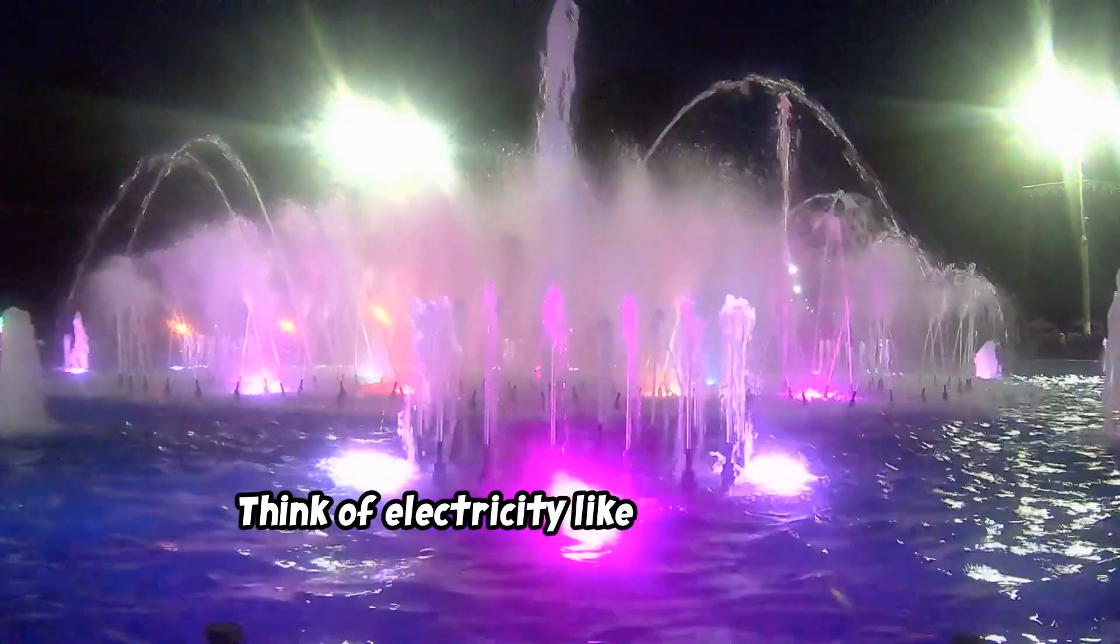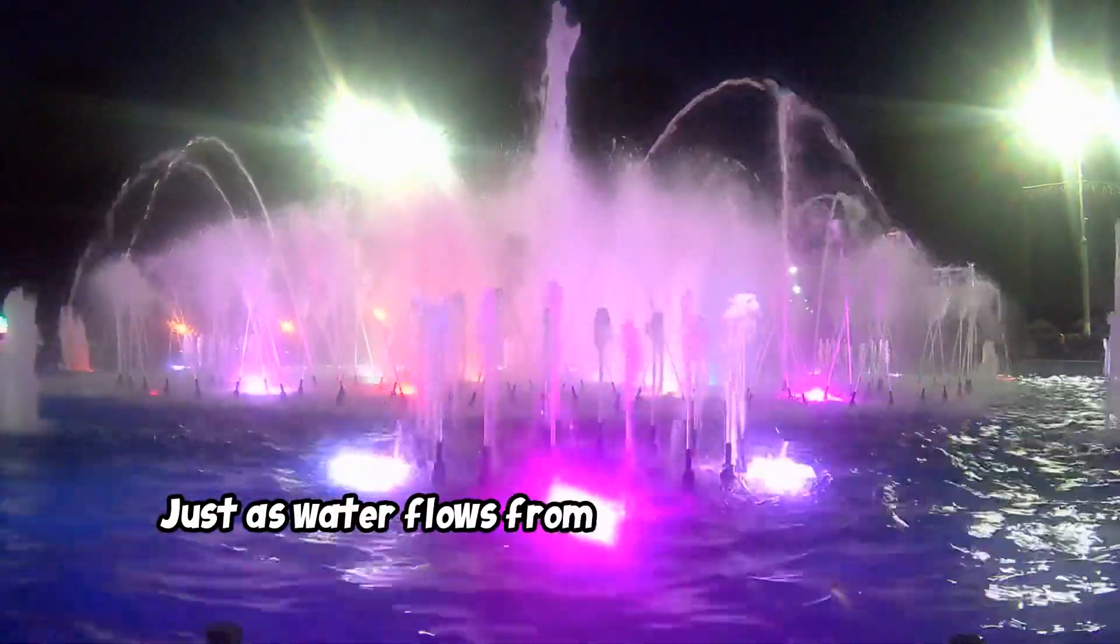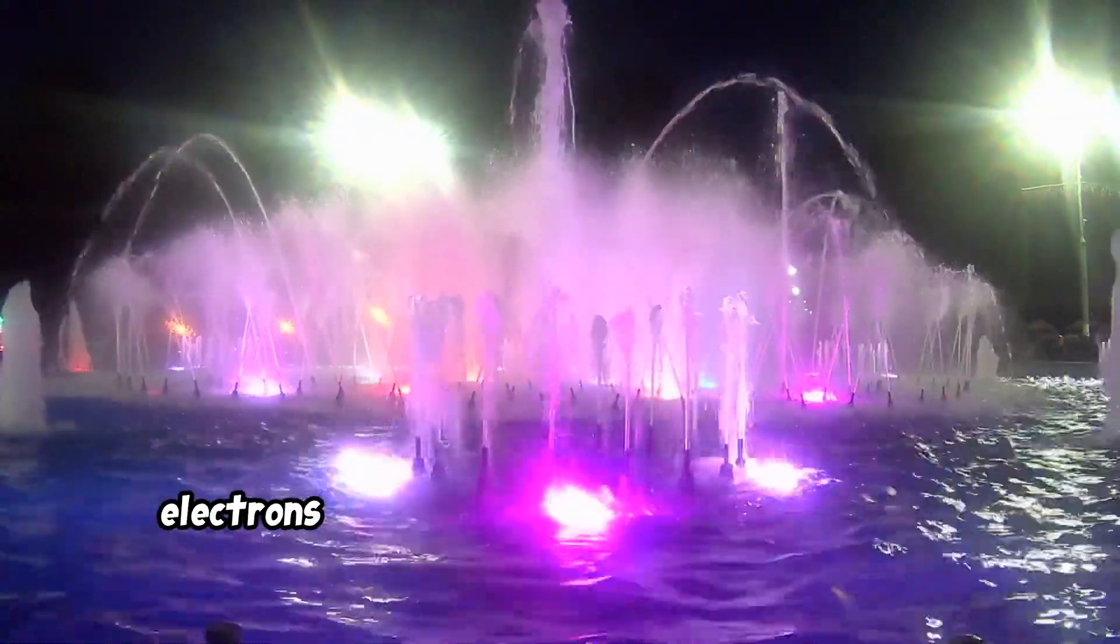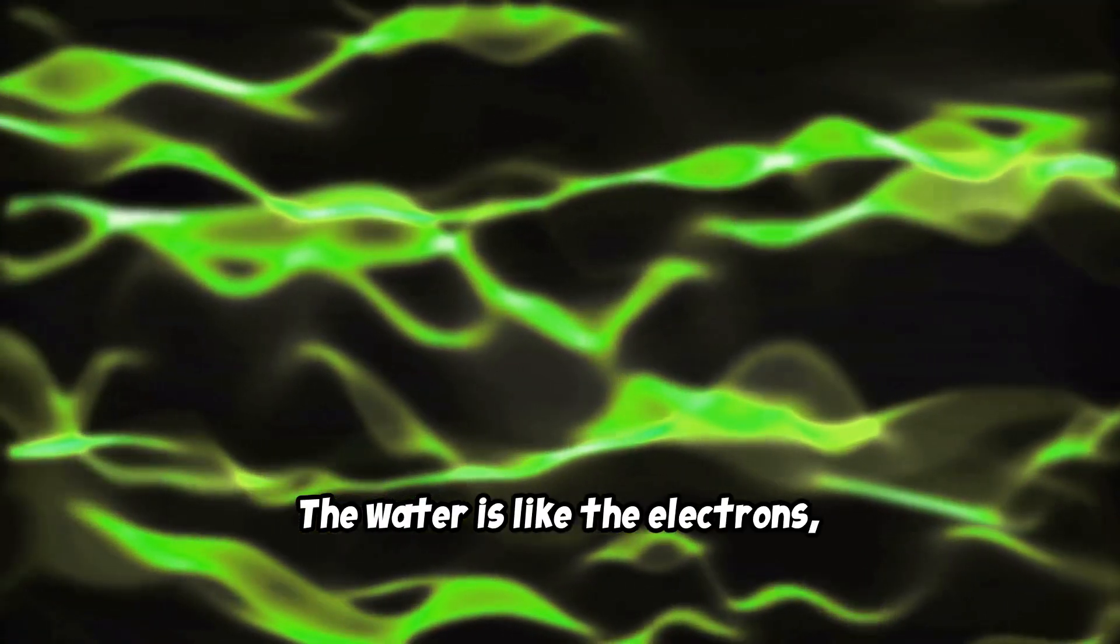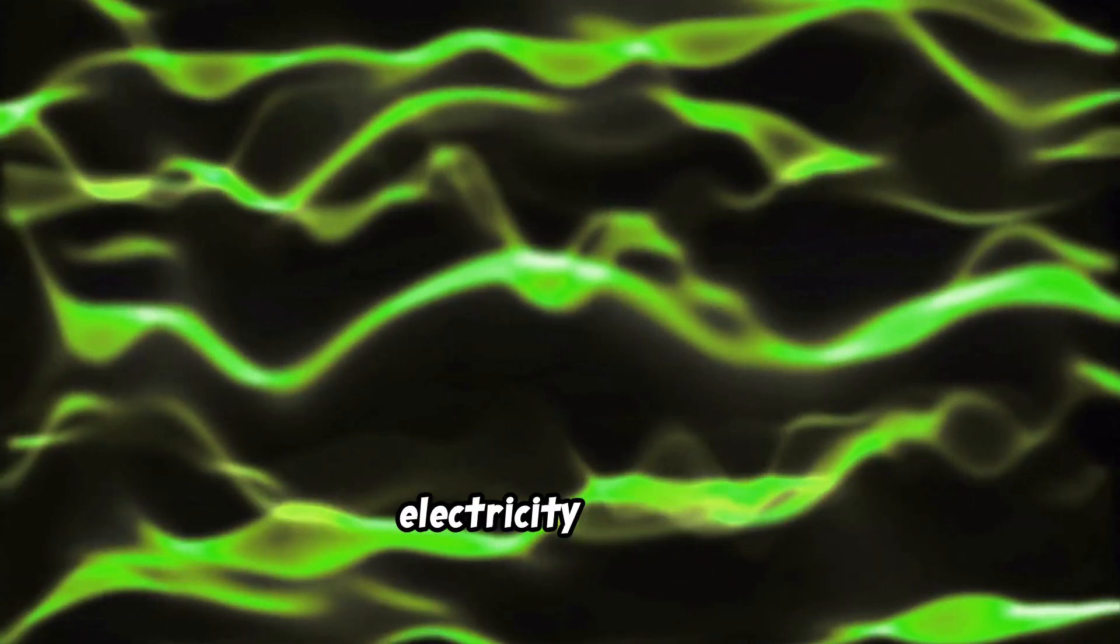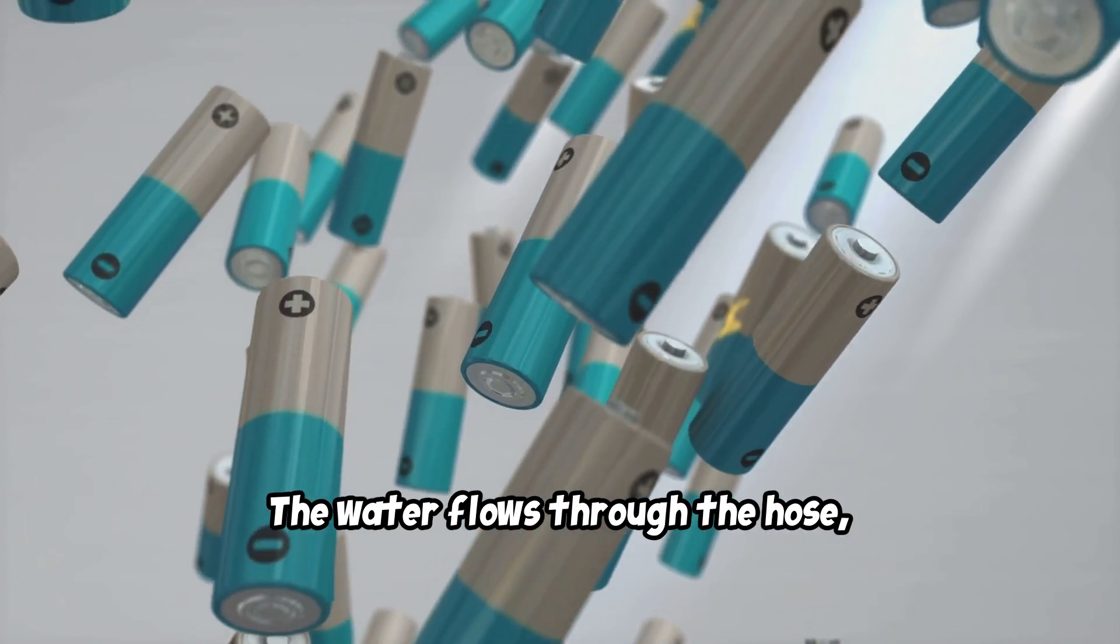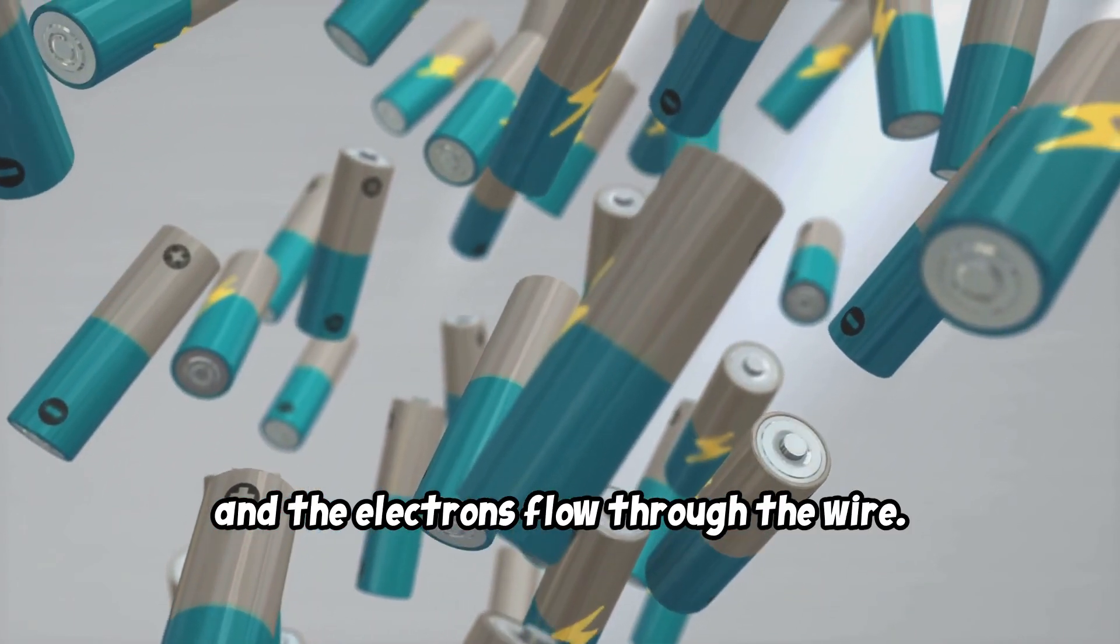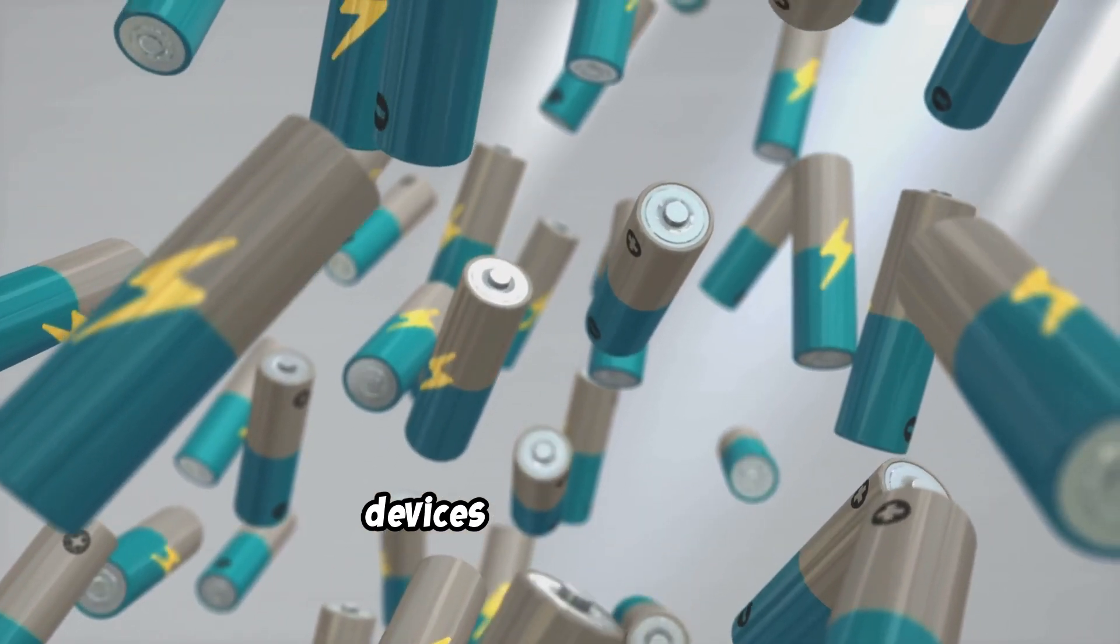Think of electricity like water flowing through a hose. Just as water flows from one end to the other, electrons move through wires to deliver energy. The water is like the electrons and the hose is like the wire. This analogy helps us understand how electricity travels. The water flows through the hose and the electrons flow through the wire. This flow of electrons is what powers our devices and appliances.